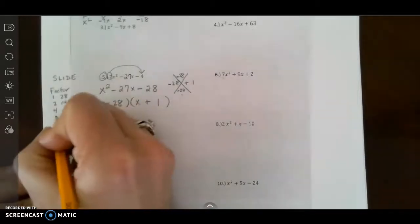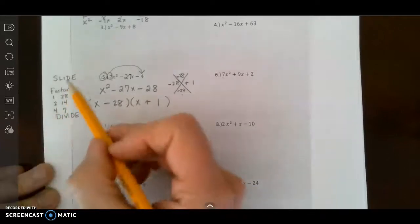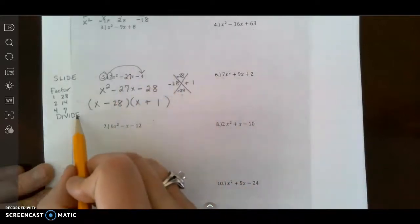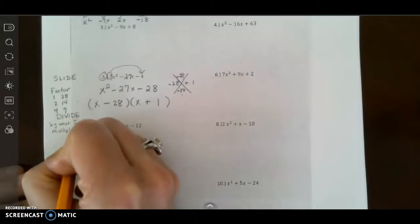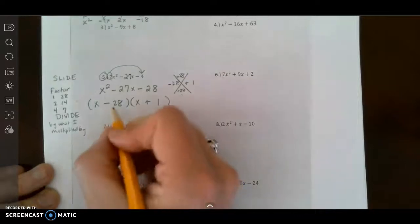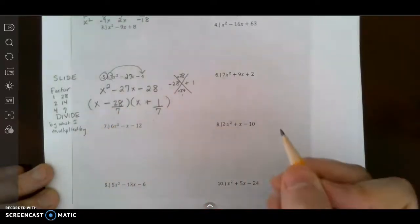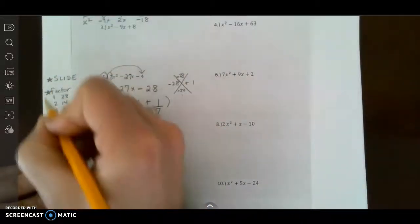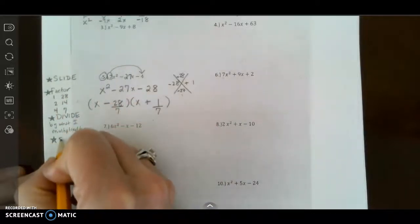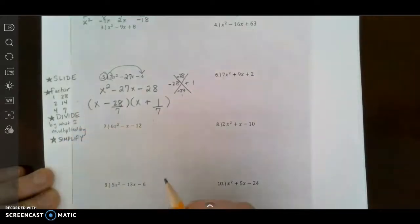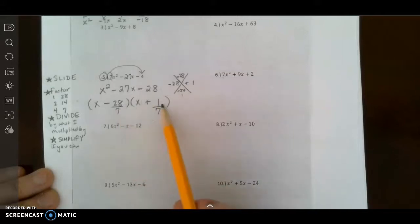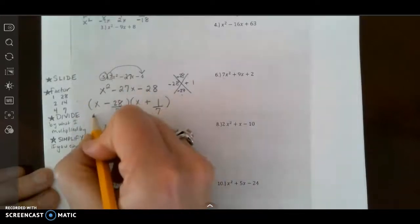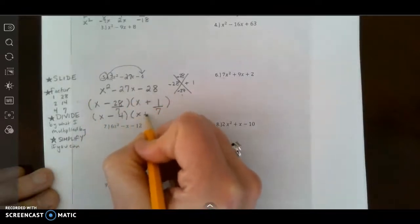So here I did slide, factor, now divide. This is the divide part of slide and divide. And I have to divide by whatever I multiplied by. I'm going to write that down in case I don't remember that, by what I multiplied by. Well I multiplied by 7. So I had to first slide, then I had to factor, then I had to divide. Next I have to simplify. This is the step people forget. Now simplify if you can. I look at these two fractions. If they can be simplified, I need to simplify them. If they can't, then I leave them. But this one can be simplified. So this becomes x minus 4 and this one is still x plus 1 over 7.